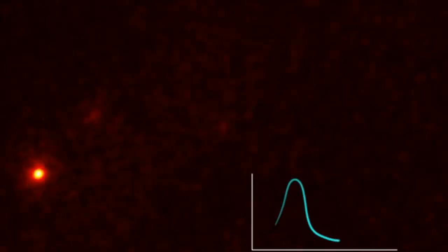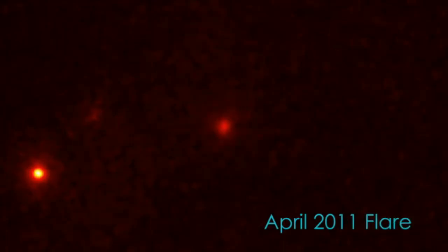Recently, NASA's Fermi Gamma Ray Observatory and Italy's Agile satellite detected strong gamma ray flares from the Crab, including a series of super flares in April 2011.